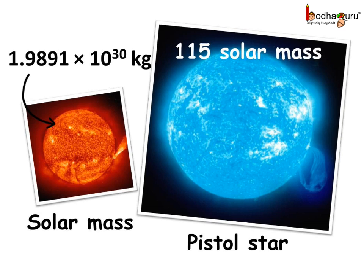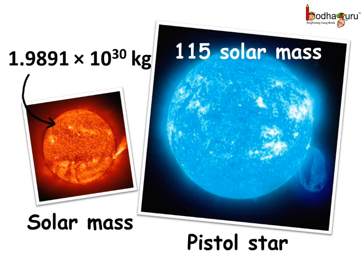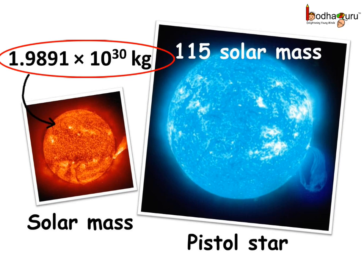Also, the weight of the sun is almost 1.9891 multiplied by 10 to the power 30 kilograms. It means 1.9891 then 26 zeros for 10 to the power 26. And it is shortly expressed as 1.9891 multiplied by 10 to the power 30 kg. And it is also a unit to measure the mass of other stars.